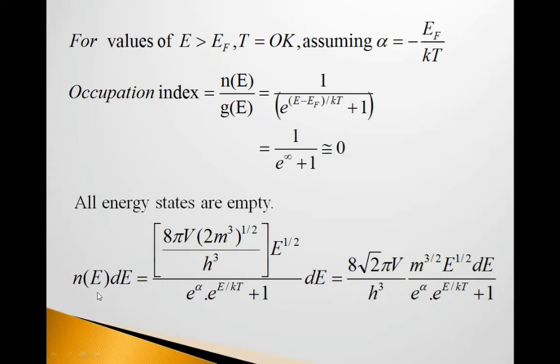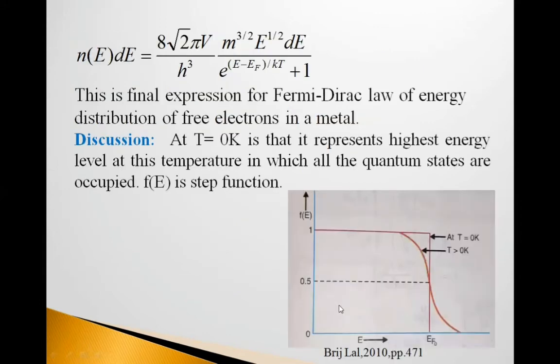Now, n(E)dE is equal to, distribution of this energy is equal to 8πV into 2m raised to 3/2 upon h cubed upon e raised to α e raised to E upon kT plus 1 into E raised to 1/2 dE. So, it is equal to 8√2πV upon h cubed into m raised to 3/2 E raised to 1/2 dE upon e raised to E minus EF upon kT plus 1. This is Fermi-Dirac energy distribution of free electrons in metal.